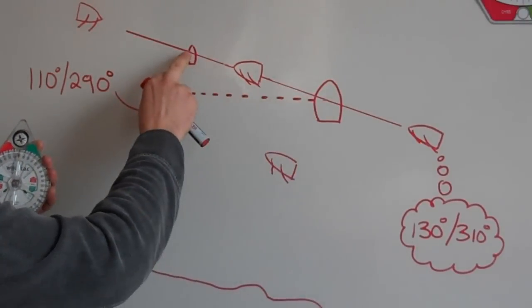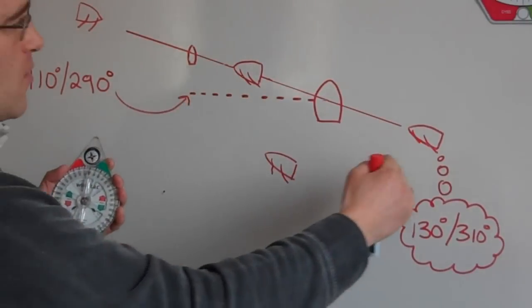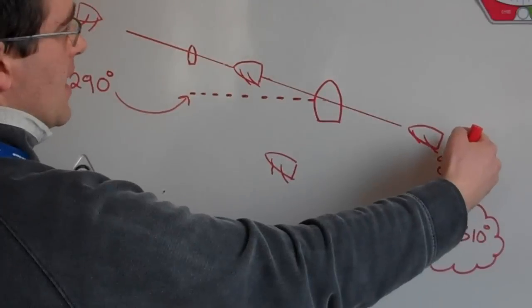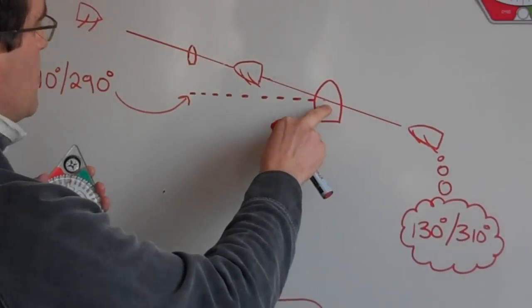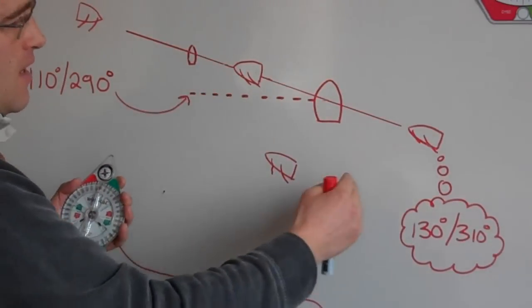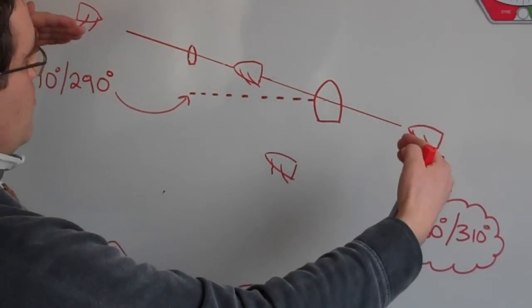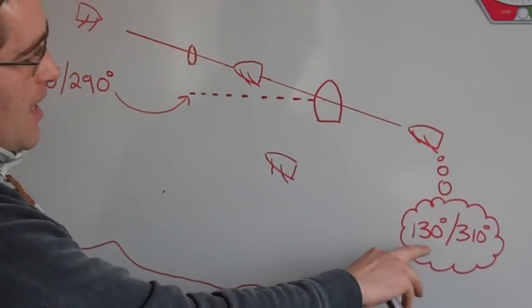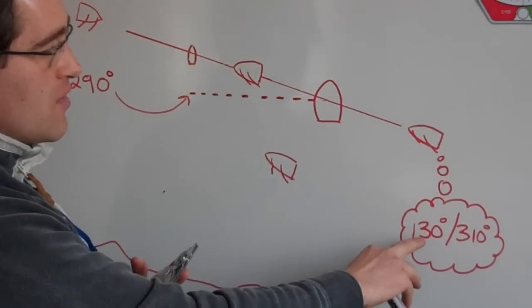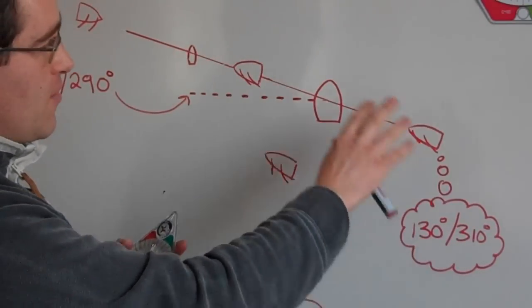So we've got the committee boat here and the pin end here. In this diagram I'm sailing along and I'm lining the committee boat up with the pin end. And I can see depending on which end of the start line we're sailing from, our compass is reading 130 or 310 from this diagram.